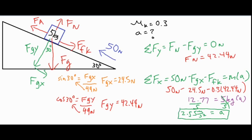To sum things up: when doing a problem like this, draw all your forces and break fg into fgy and fgx components. If the applied force is greater than fgx, the object travels up the ramp — take that as your main driving force, subtract fgx and any friction to solve for acceleration. If the object is moving down a ramp, the 50 newtons is not present; instead use fgx minus the force of friction equals ma.